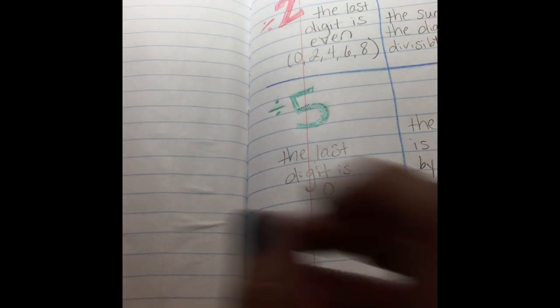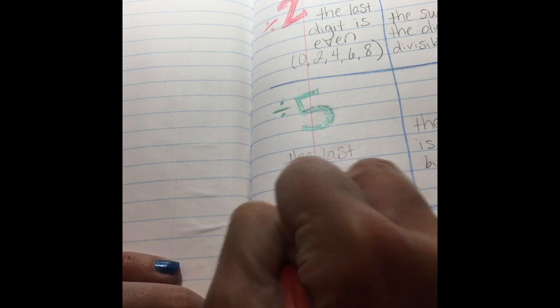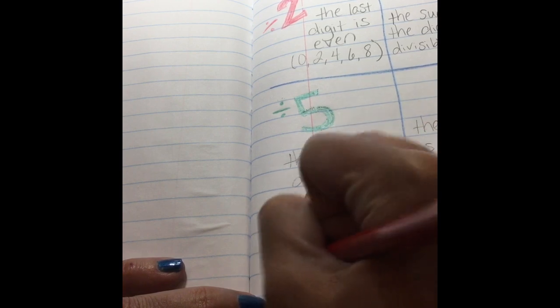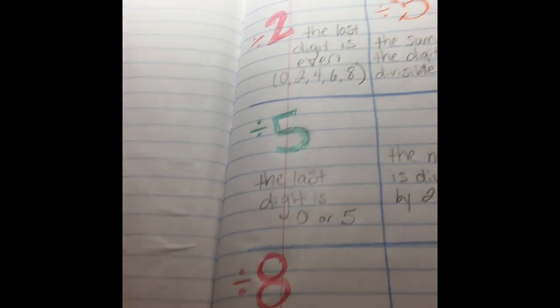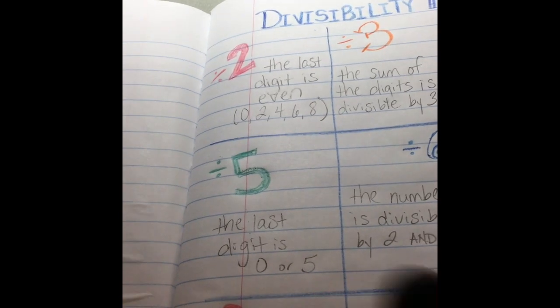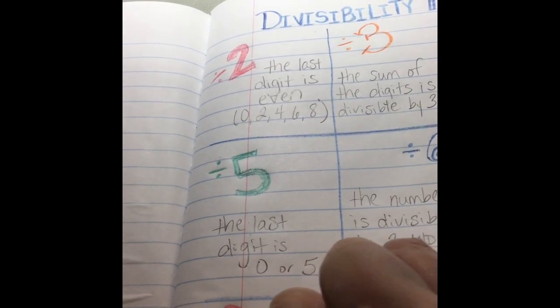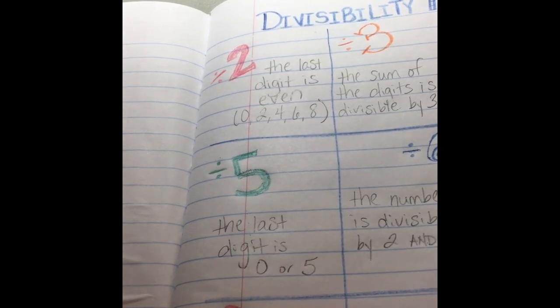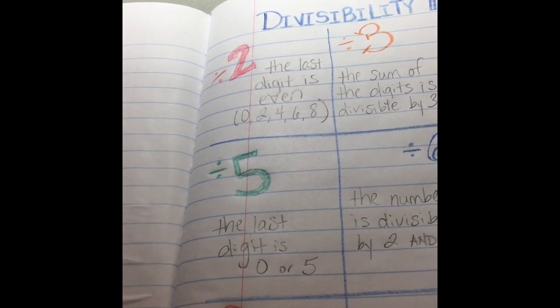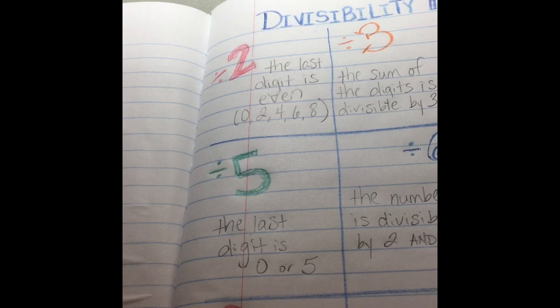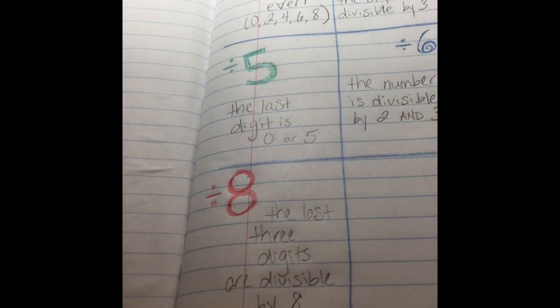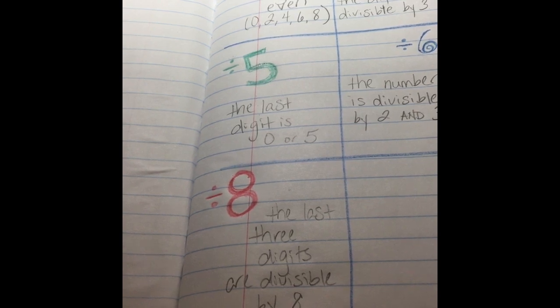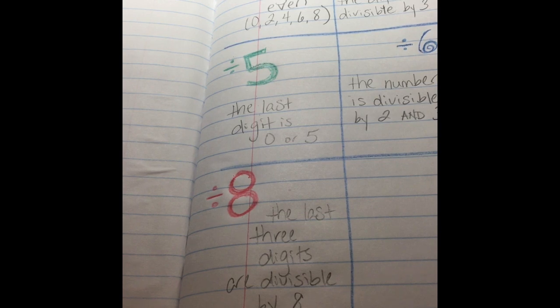So I'm going to come over here and we're going to do divisible by eight. The number is divisible by eight if the last three digits are divisible by eight. So that's not really going to help you with two digit numbers or even really with three digit numbers. But if you were getting into some really large numbers, you just have to check the last three digits.